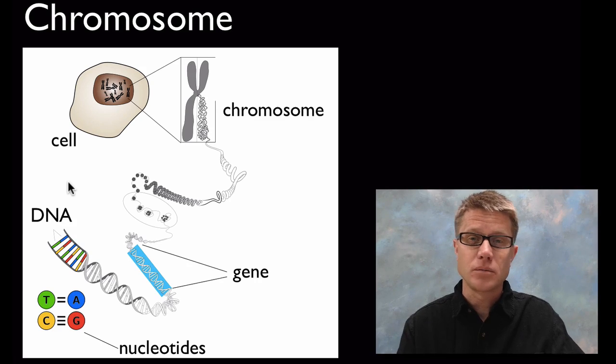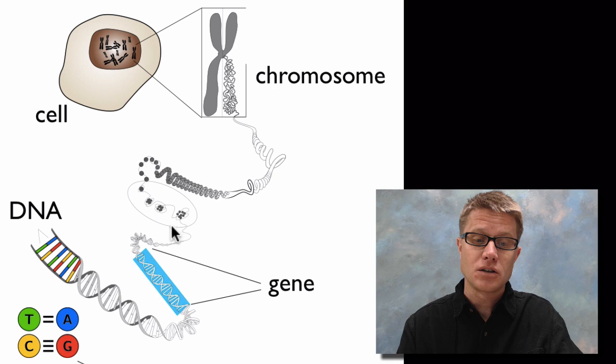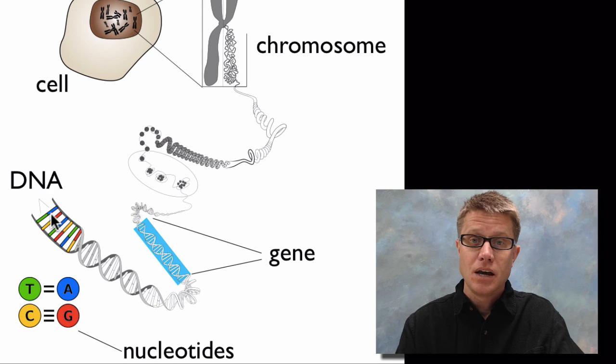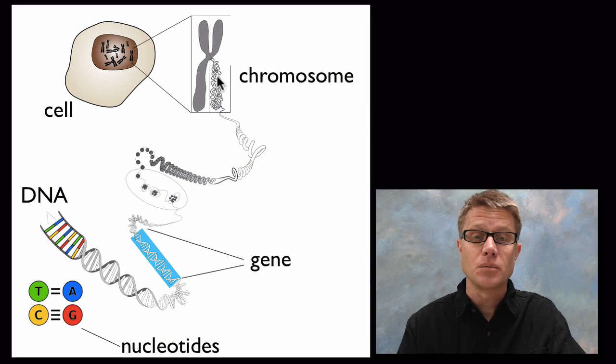Sometimes students struggle with what's a chromosome, gene, DNA, nucleus, all of that. First we have a cell. In a typical eukaryotic organism like us, you have a nucleus. Inside the nucleus you have chromosomes—we have 46 in humans. If you unravel that chromosome, you'll find sections called genes. The whole thing is made of DNA, which itself is made of nucleotides, sometimes called the four letters of DNA. We have lots of chromosomes inside us.